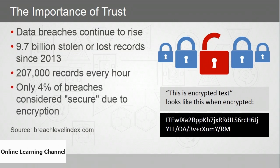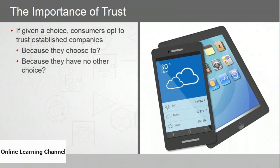Only 4% of breaches were considered secure because encryption was used to protect the data being stolen. That all makes a pretty good case for the importance of trust. If given a choice, consumers will always trust established companies — but why? Because they choose to?